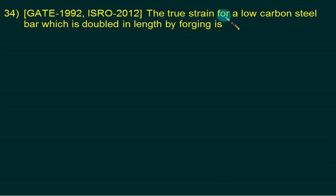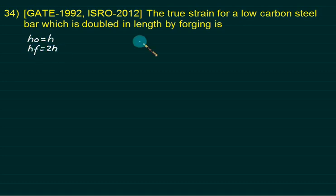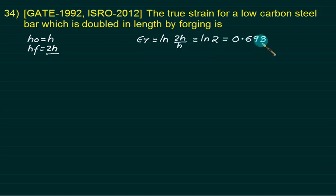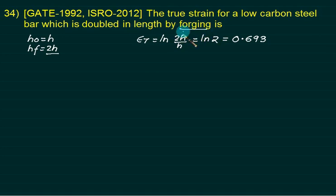Example 3: True strain for a low carbon steel bar doubled in length. If initial length is H and final length is 2H, true strain = ln(2H / H) = ln(2). Remember, the true strain formula always uses the higher value divided by the lower value. Since forging gives negative strain, it is always written as a positive value.